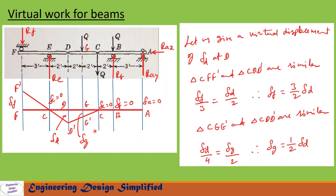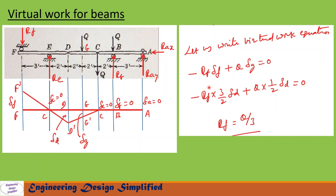Now let us write the virtual work equation: −RF · delta F + Q · delta G = 0. Substituting the values for delta F and delta G and simplifying, we get the reaction at F: RF = Q/3.